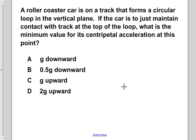A roller coaster car is on a track that forms a circular loop in the vertical plane. If the car is just to maintain contact with the track at the top of the loop, what is the minimum value for centripetal acceleration at this point?